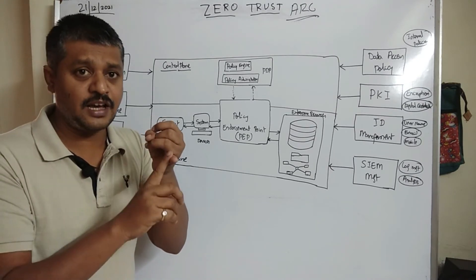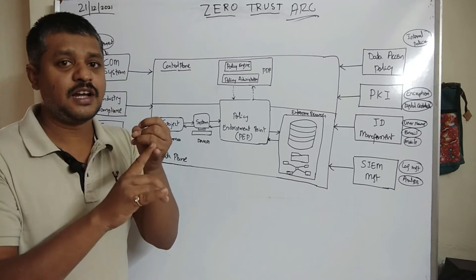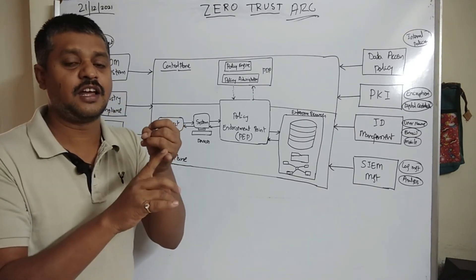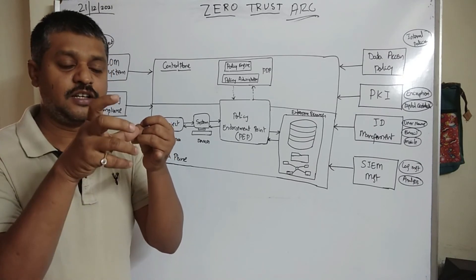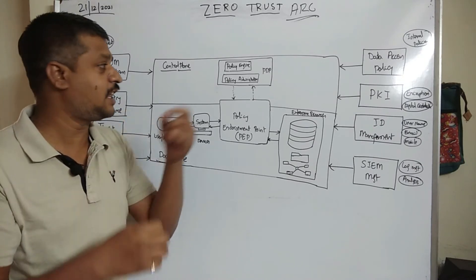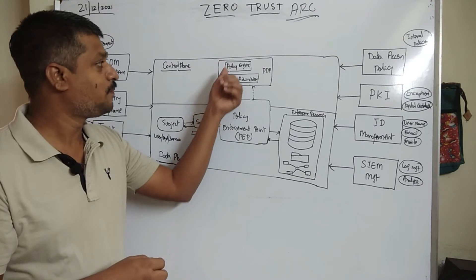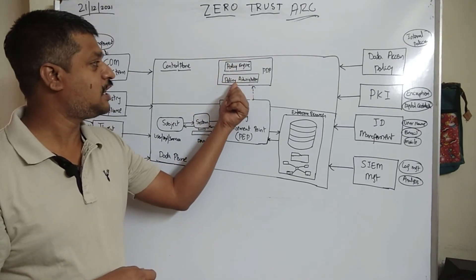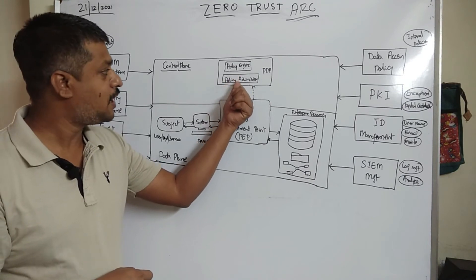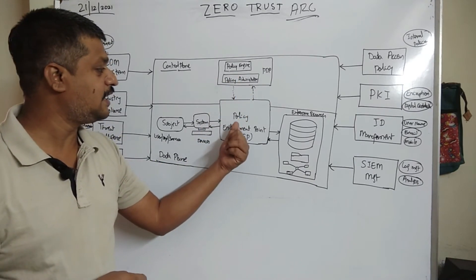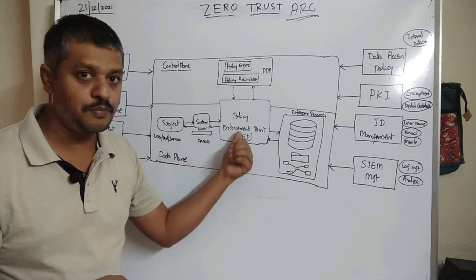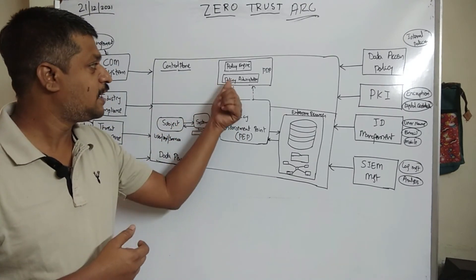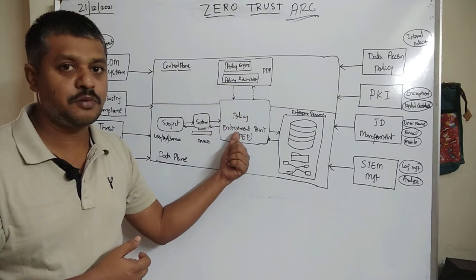The policy engine checks: is the user from India? Does the user have a whitelisted IP address? Is the user connecting with the defined applications? Based on all these checks, it will either approve or deny. The policy administrator then communicates the decision back to the policy enforcement point.